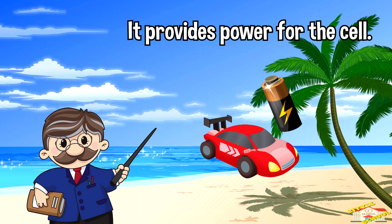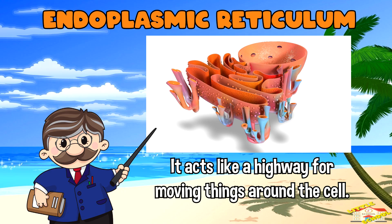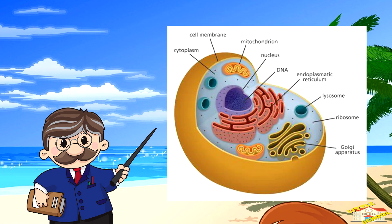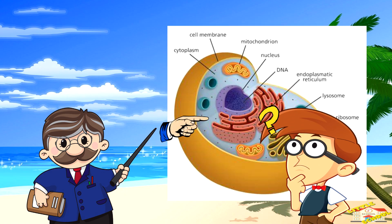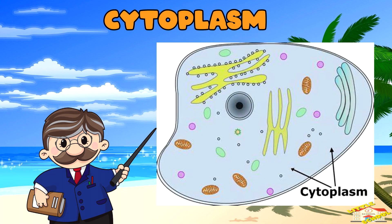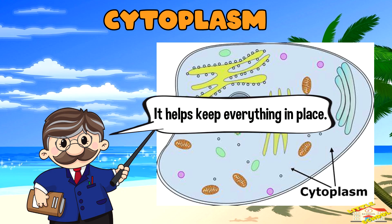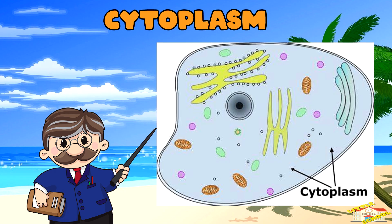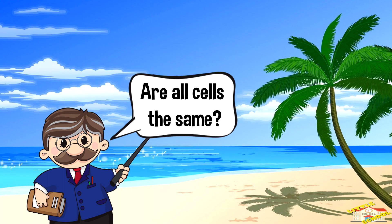We also have the endoplasmic reticulum, which is like a highway for moving things around the cell. You might be wondering — what's the jelly-like stuff around the organelles? That's the cytoplasm. It helps keep everything in place.